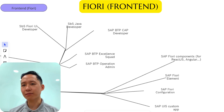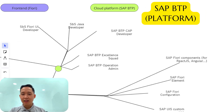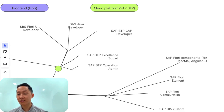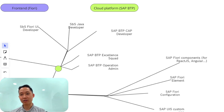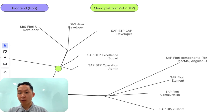Last, but definitely not least, is the SAP BTP path for cloud computing. BTP stands for SAP Business Technology Platform, and it's all about cloud solutions and integrating various SAP systems together. Here, you can work as a SAP BTP developer, where you will focus on the cloud application programming model. Or, if you're more interested in cloud operations, you might join the SAP BTP operations admin team or application support, ensuring that cloud systems run smoothly and efficiently.